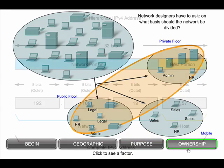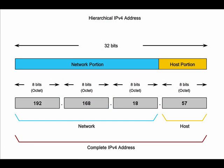IP addresses are hierarchical in nature. That is, part of the address represents the network, and part represents a specific host on the network. An IPv4 address is four bytes, which is divided into two parts: the network portion and the host portion. In this example, the first three bytes of the address is the unique identifier of the network — in this case the 192.168.18 network — and the last byte is the unique identifier of the host within that network, in this case the .57 host. In this network, all devices will have the same first three bytes in the address. Routers forward packets from one network to another by only using the network portion of the address.